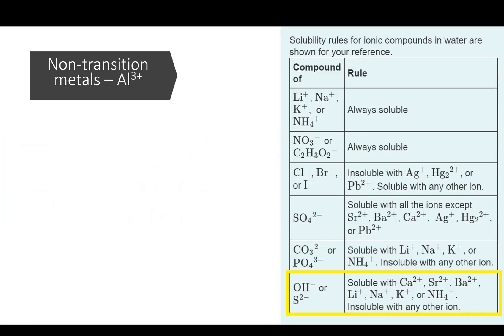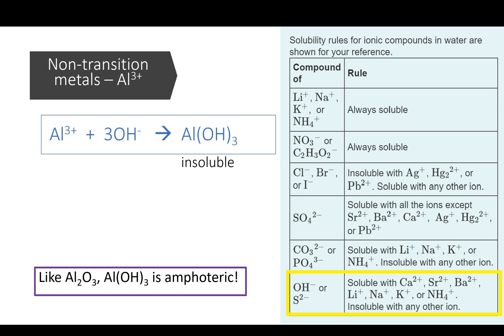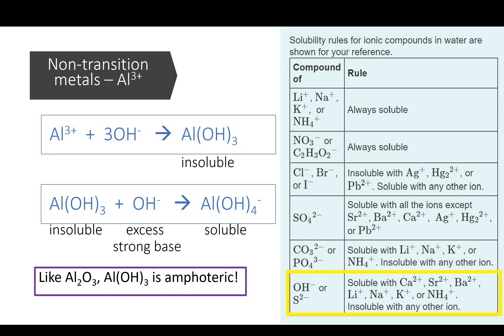Aluminium hydroxide is insoluble, but just like aluminum oxide is amphoteric, which means aluminum hydroxide can further react with excess hydroxide to form a soluble ion. That's why it dissolves in excess sodium hydroxide. However, ammonia is not a strong enough base to bring out the amphoteric properties of aluminum hydroxide.